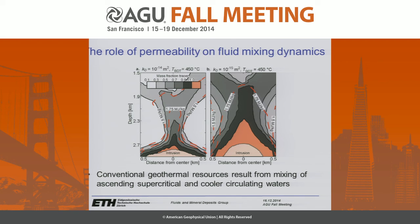A good way to understand the role of permeability on fluid mixing and the size of the supercritical resource is to implement passive tracers, which can follow the movement of supercritical fluid through the geothermal system. Comparing results for a high permeability system of 10⁻¹⁴ square meters on the left and an intermediate permeability on the right: for the high permeability system at depths typically associated with geothermal production — around two kilometers — roughly half of the fluid mass had at some point been heated to supercritical conditions. For the intermediate permeability system, in the core of the upflow, this fraction can increase to close to 90%.